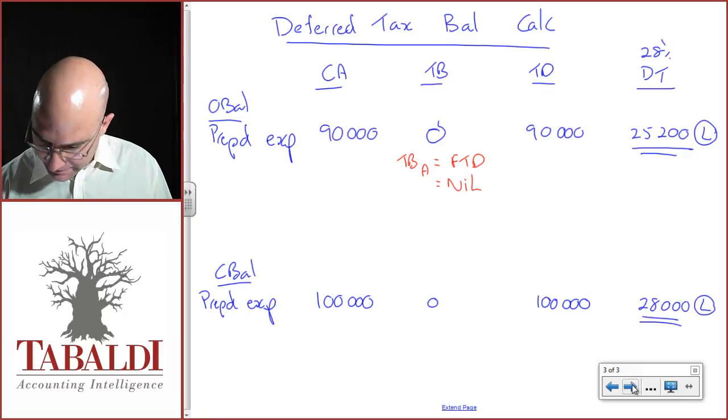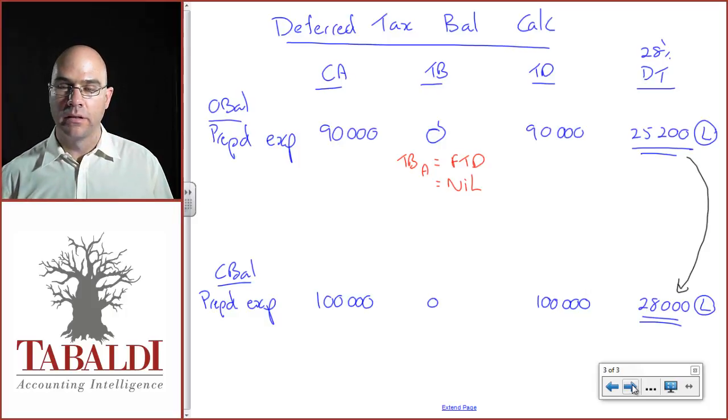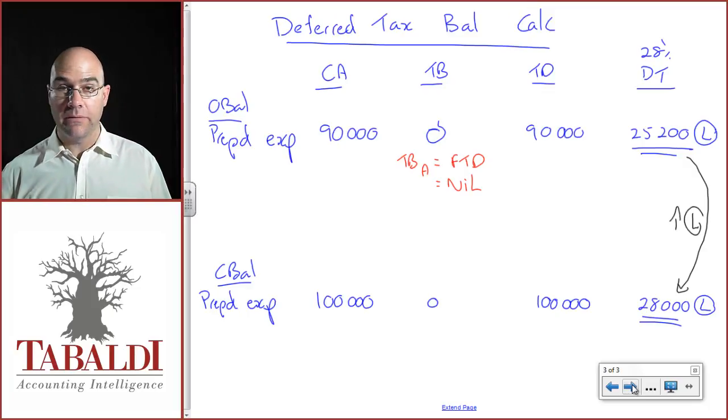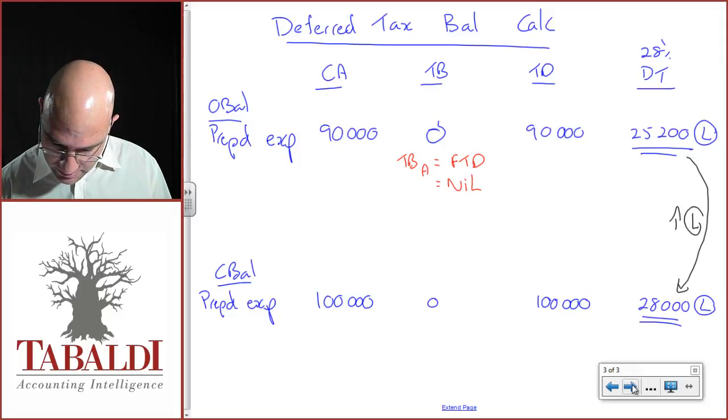Should be getting the hang of this by now. We now need to do the movement. So what have I done here? I've got an increase in a liability from 25,200 to 28,000. So how do I increase a liability?